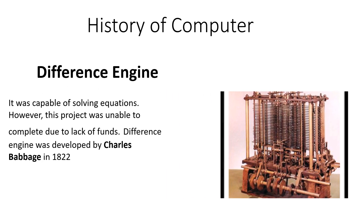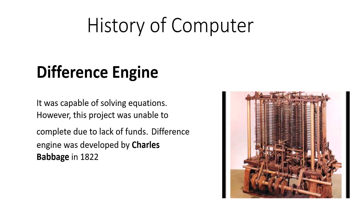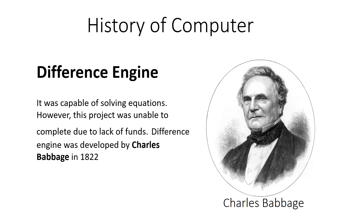Another device is the Difference Engine. The Difference Engine was a device that was capable of solving equations. However, this project was unable to be completed due to lack of funds. The Difference Engine is one of the two engines that was designed by Charles Babbage in 1822.